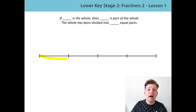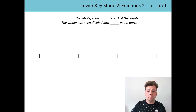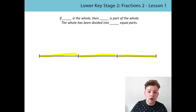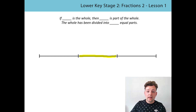Now it's your turn. Pause the video and try to say the stem sentence to yourself. This time we have a line — it is the same whole, but there are a different amount of equal parts. How many equal parts can you see? Let's count: one equal part, one more equal part, and another equal part. There are three equal parts in the line. I'm going to highlight one of those equal parts. If this line is the whole, then this is part of the whole. The whole has been divided into three equal parts.